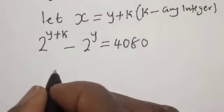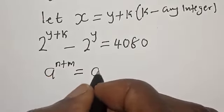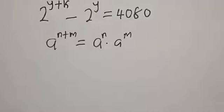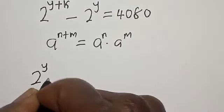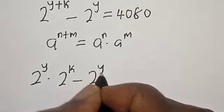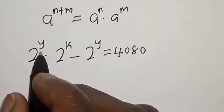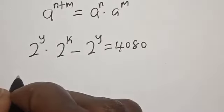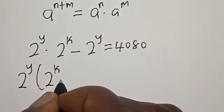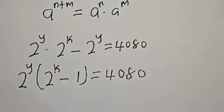Now, note that a raised to power (n plus m) is equal to a raised to power n multiplied by a raised to power m. Applying this, we get 2 raised to power y multiplied by 2 raised to power k, minus 2 raised to power y, is equal to 4080. Factoring out, 2 raised to power y times (2 raised to power k minus 1) equals 4080.